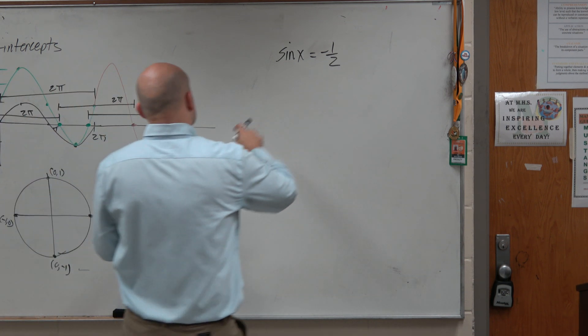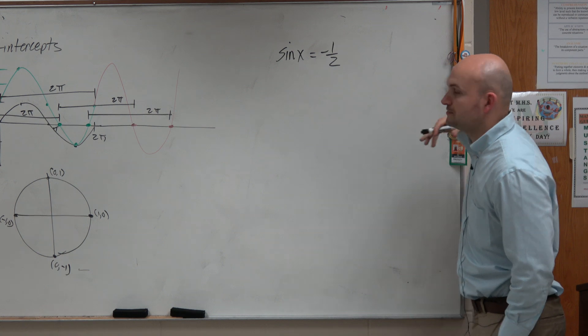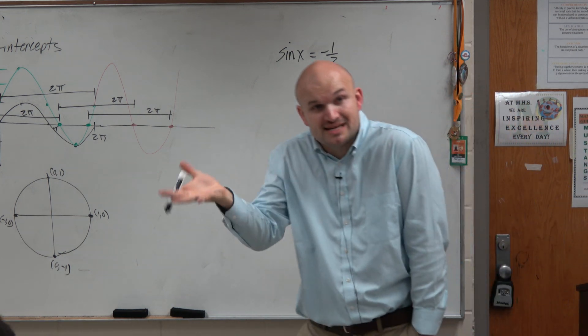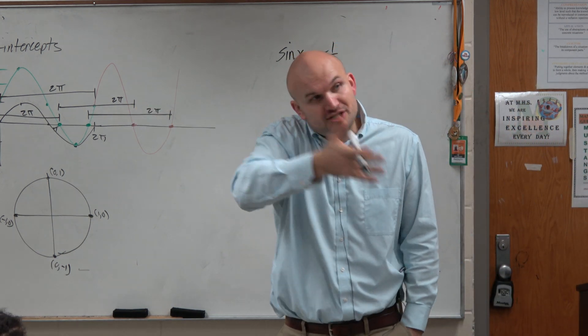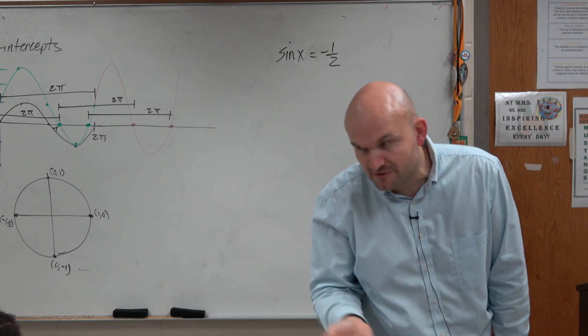So to further understand, guys, we have sine of x equals negative 1/2. And again, we've got to undo the sine, right? We undo addition by subtracting, we undo multiplication by division.